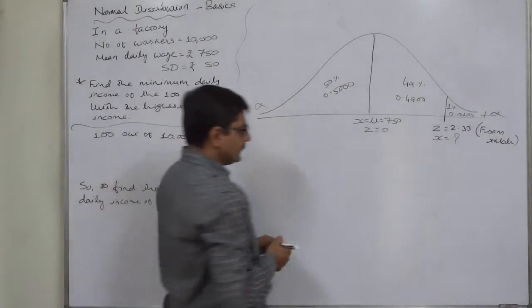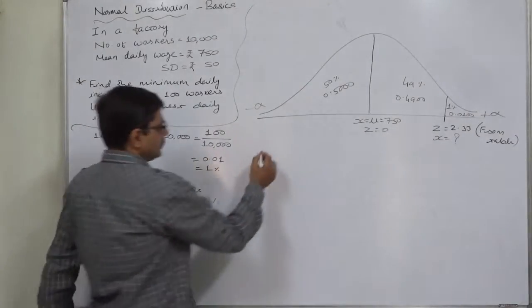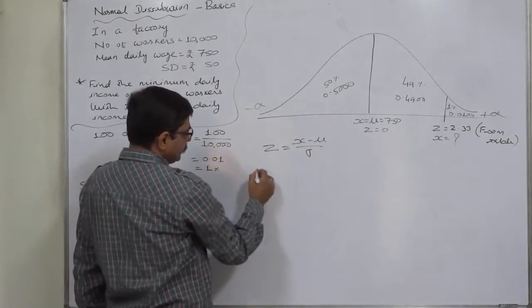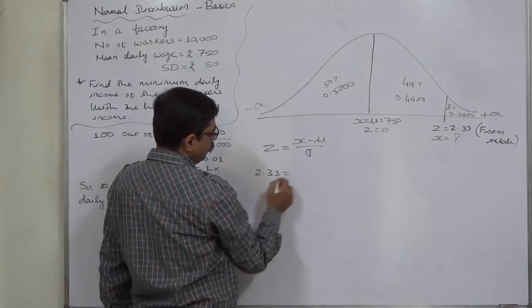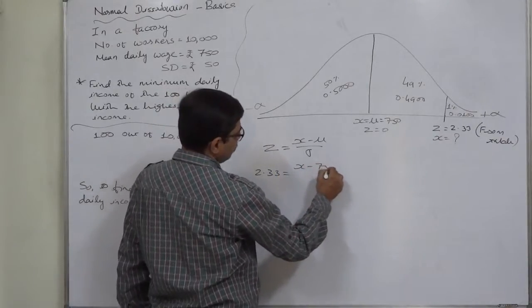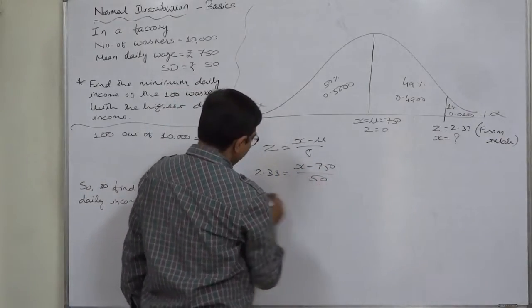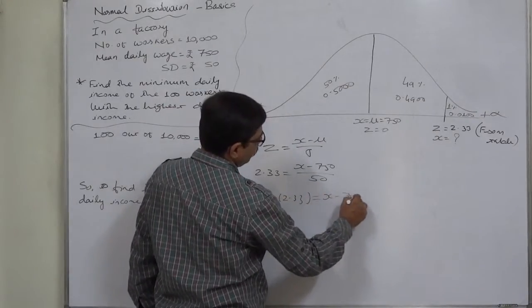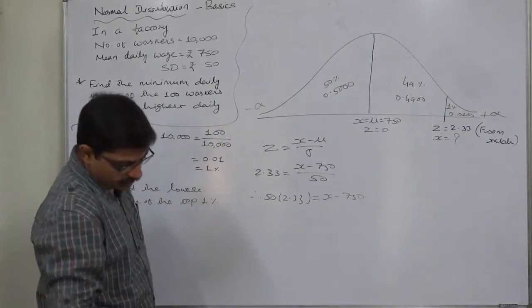Z = (X - mean)/standard deviation. Since it's the right-hand side, Z will be positive: 2.33 = (X - 750)/50. So 50 × 2.33 = X - 750. The multiplication comes to 116.5 = X - 750.